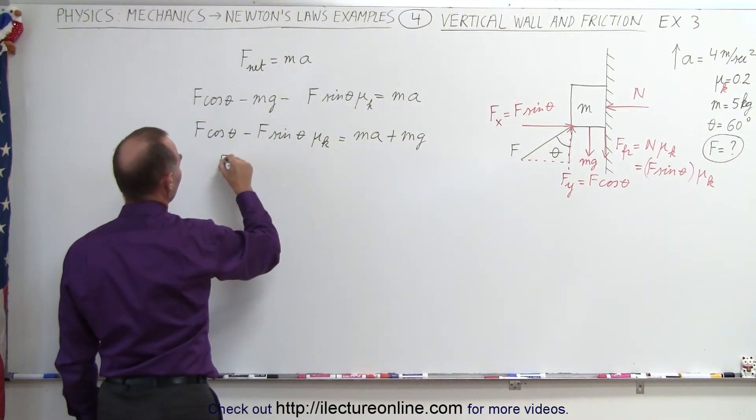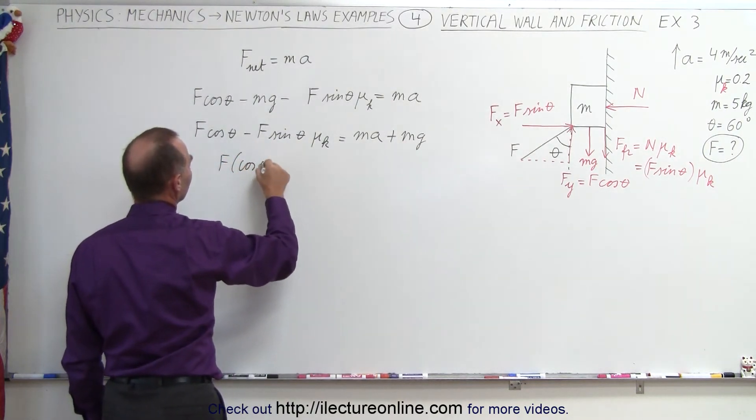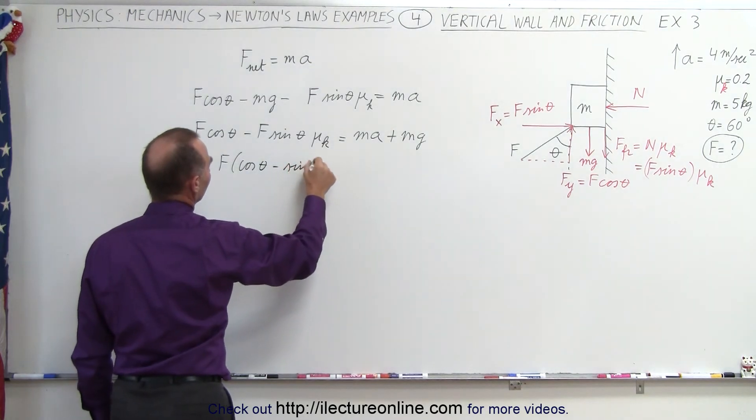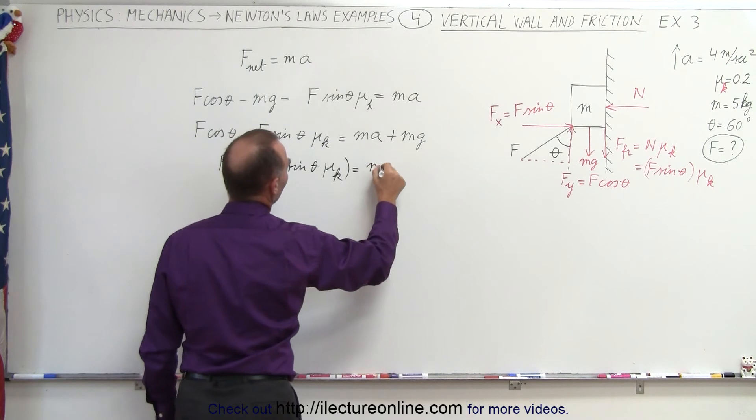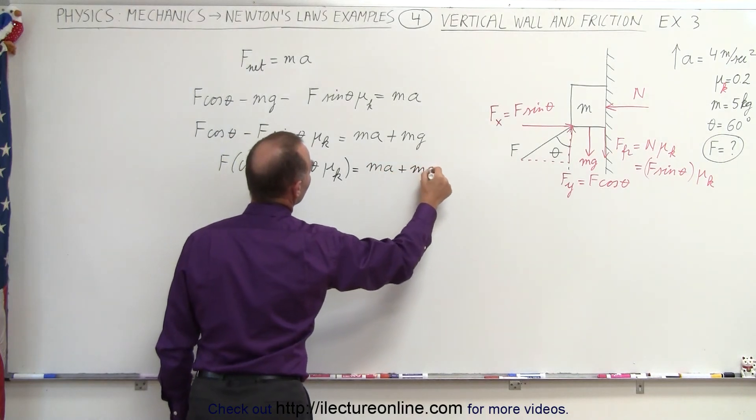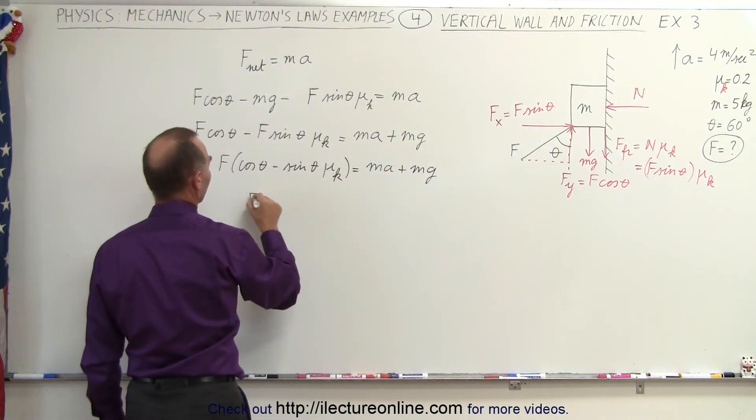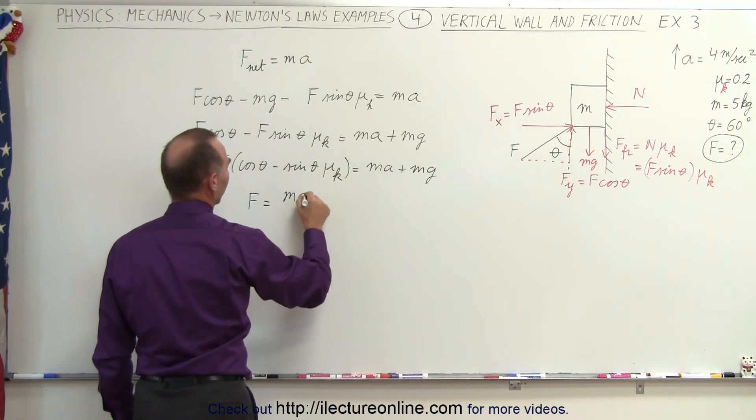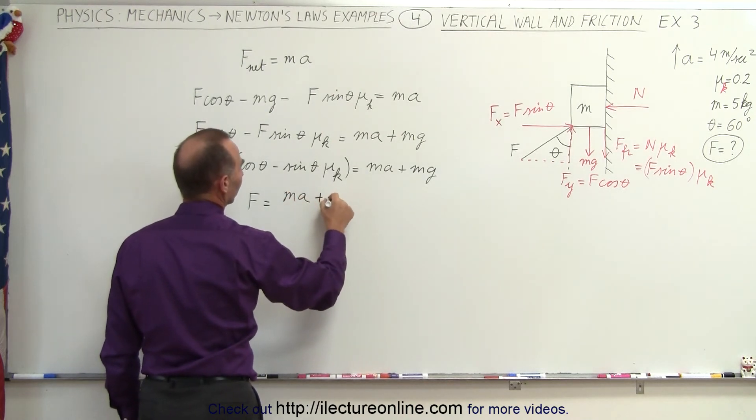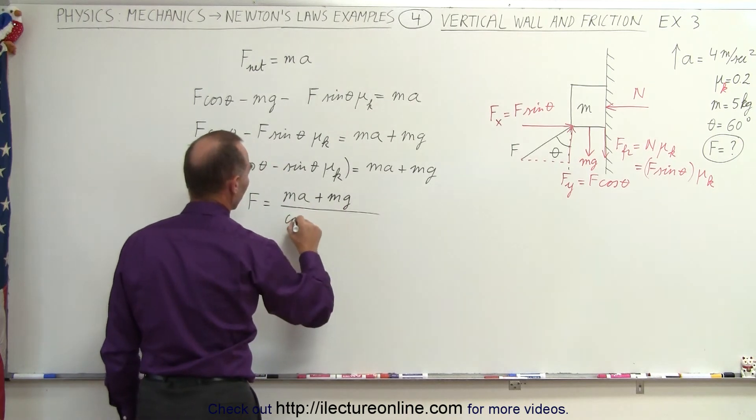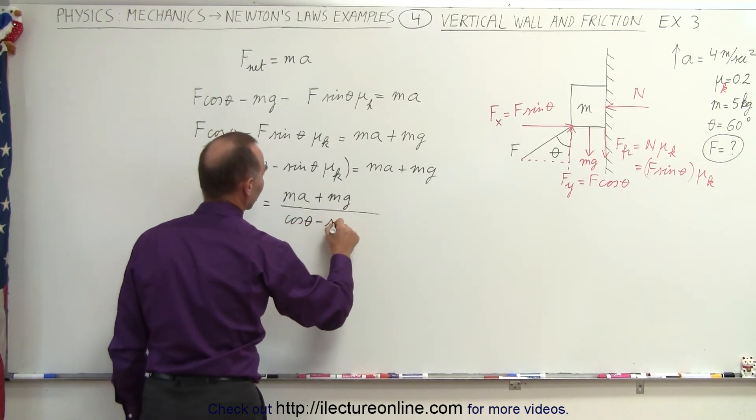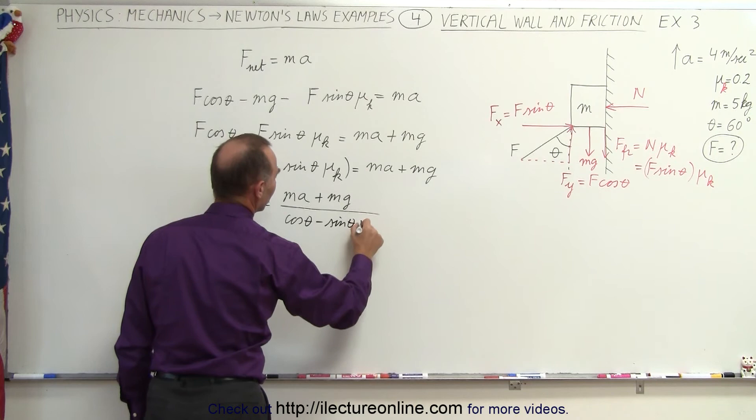Factoring out an F, we have F times the cosine of theta minus the sine of theta mu sub k, is equal to ma plus mg, and finally F will therefore equal to the force required to accelerate it, plus the force required to hold it up against gravity, divided by the cosine of theta minus the sine of theta times mu sub k.